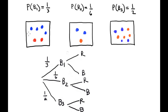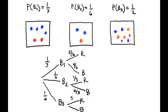Looking at this, for B1 the probability of selecting red is 2 over 6, and blue is 4 over 6. For B2, red is 1 over 3 and blue is 2 over 3. For B3, red is 5 over 9 and blue is 4 over 9.